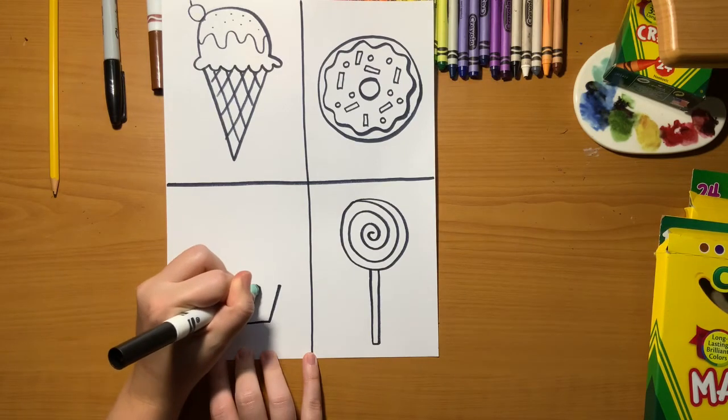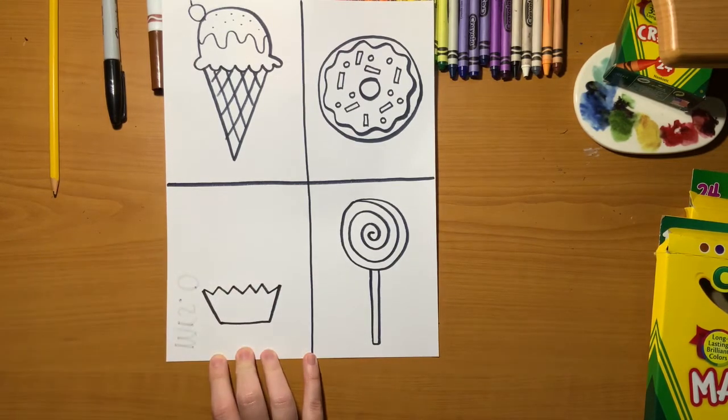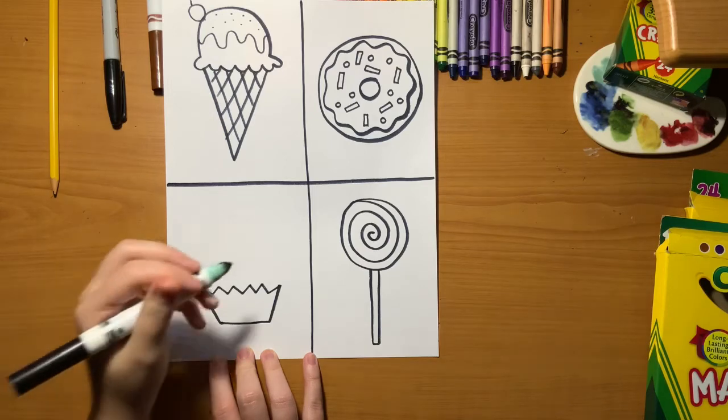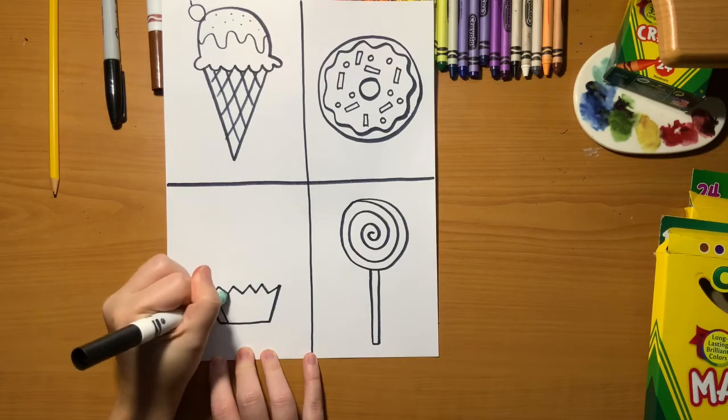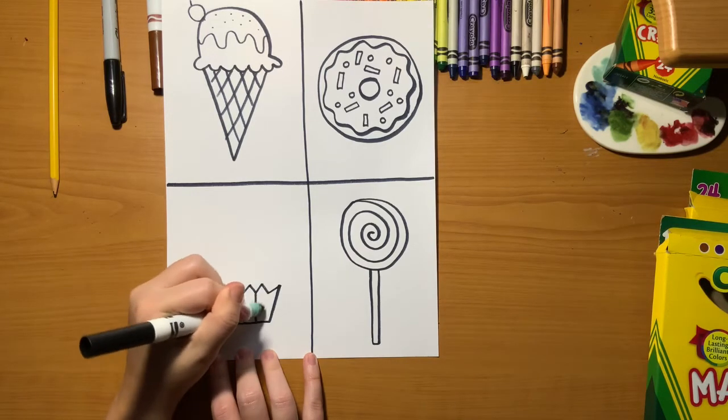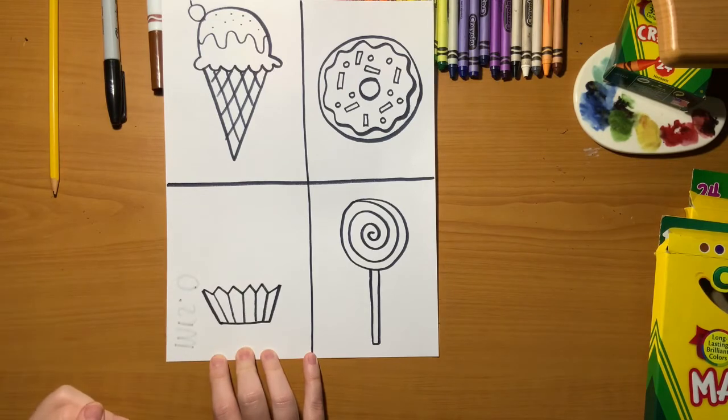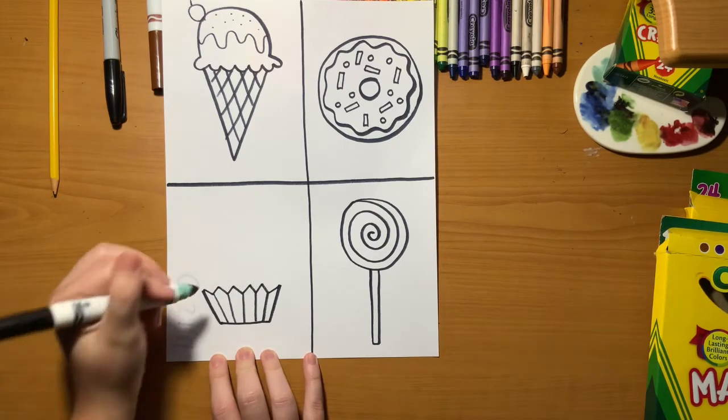We're going to make a zigzag line to show that wrapper connecting our two diagonal lines. If you want to add details to the wrapper like stripes or polka dots or anything like that, you can.